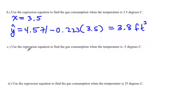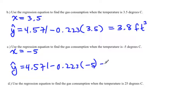Let's do another one. Use the regression equation to find the gas consumed when the temperature is negative 5 degrees Celsius. In this case, again, they are giving you the x variable, it is negative 5. Put it back into your regression equation of 4.571 minus 0.223 times negative 5. When you do that calculation, you will get 5.7 cubic feet.